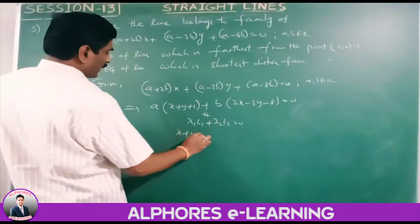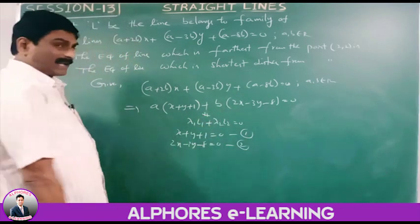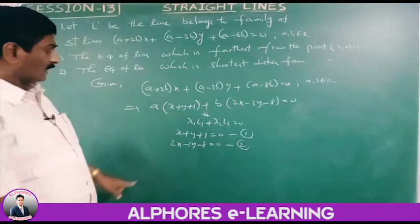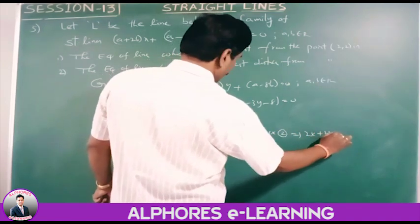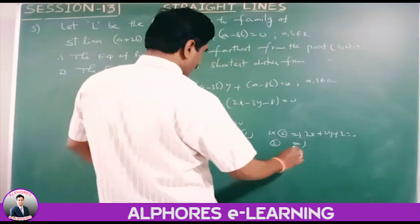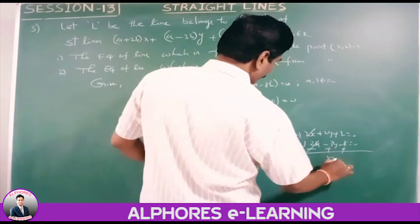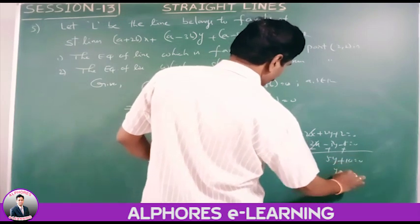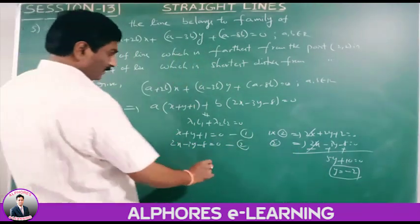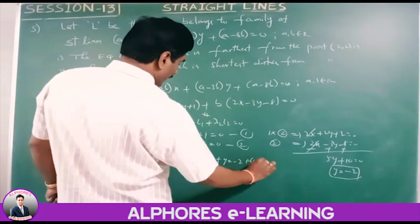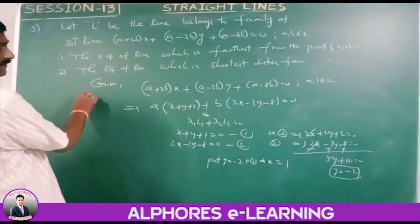Line 1: x plus y plus 1 equals 0. Line 2: 2x minus 3y minus 8 equals 0. Multiplying line 1 by 2: 2x plus 2y plus 2 equals 0. Subtracting line 2: 5y plus 10 equals 0, so y equals minus 2. Substituting into line 1: x minus 2 plus 1 equals 0, so x equals 1. The point of concurrency is A(1, minus 2).